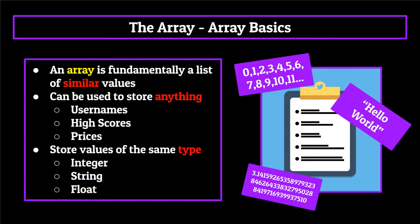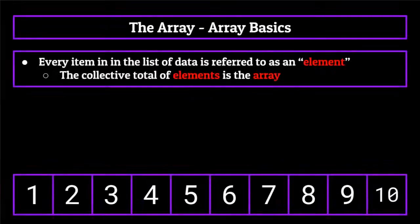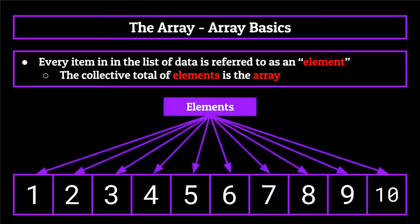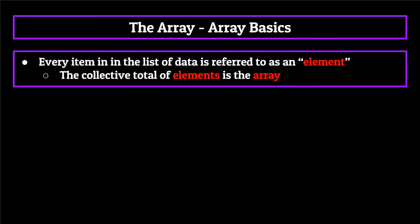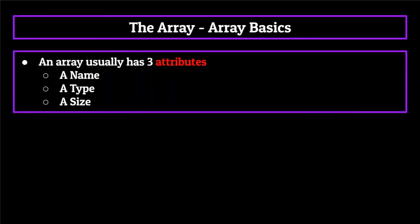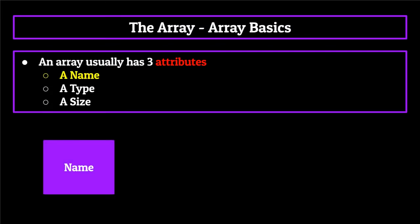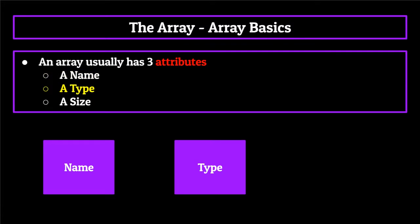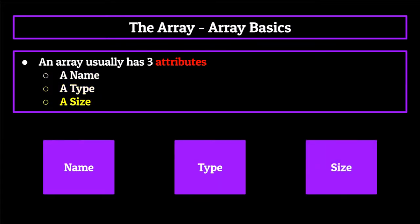Every item contained within the array is referred to as an element of that array, and we call the collective total of elements the array. An array will also have three attributes associated with it: the first being a name for the array, the second a type for the array, and the third a size for the array. The name is just simply a name for the array which can be used to reference and interact with it.